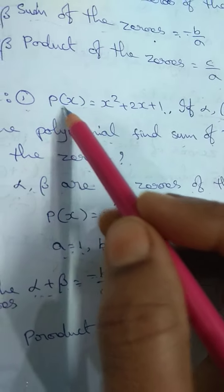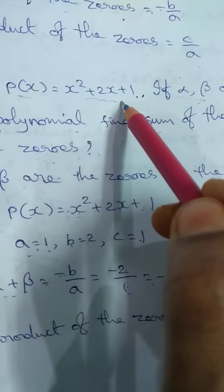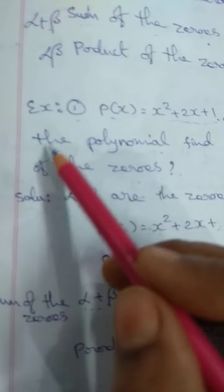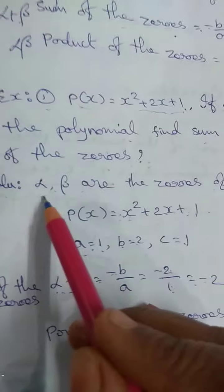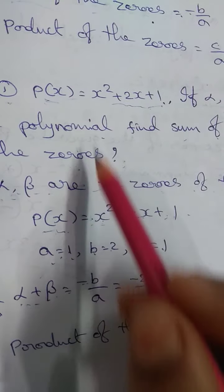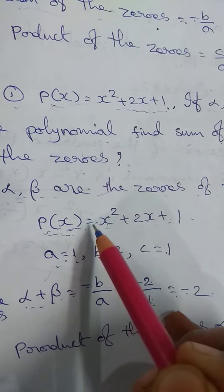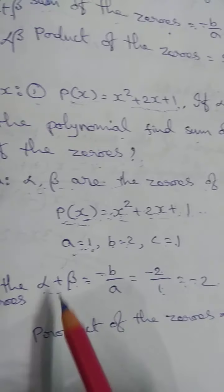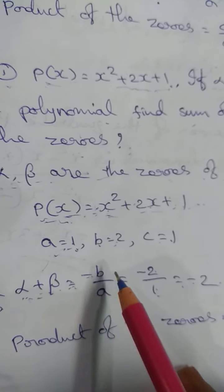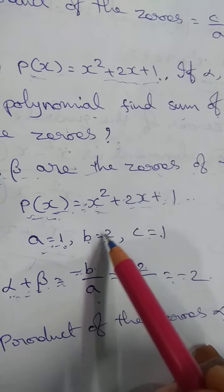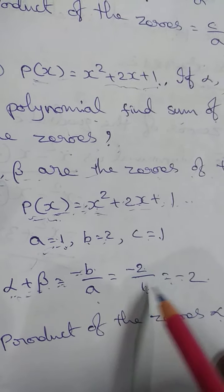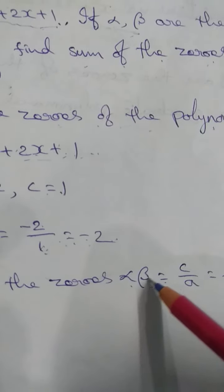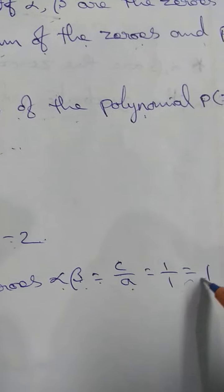In general, for a quadratic polynomial ax² + bx + c, if alpha and beta are the zeros, then sum of zeros alpha + beta = -b/a and product of zeros alpha × beta = c/a. Example: p(x) = x² + 2x + 1. If alpha and beta are zeros, sum of zeros = -b/a = -2/1 = -2. Product of zeros = c/a = 1/1 = 1.